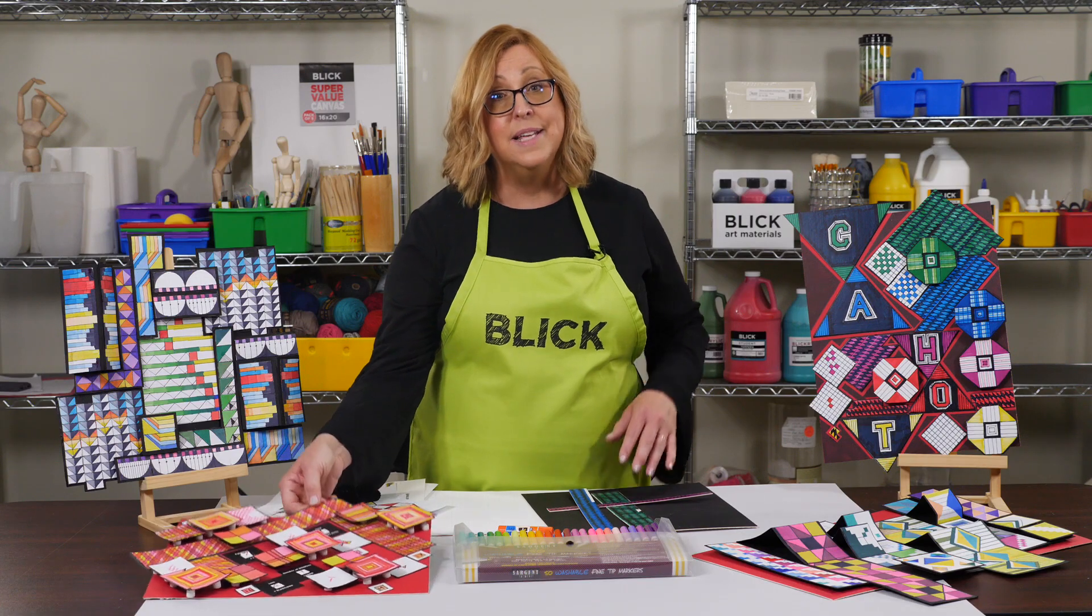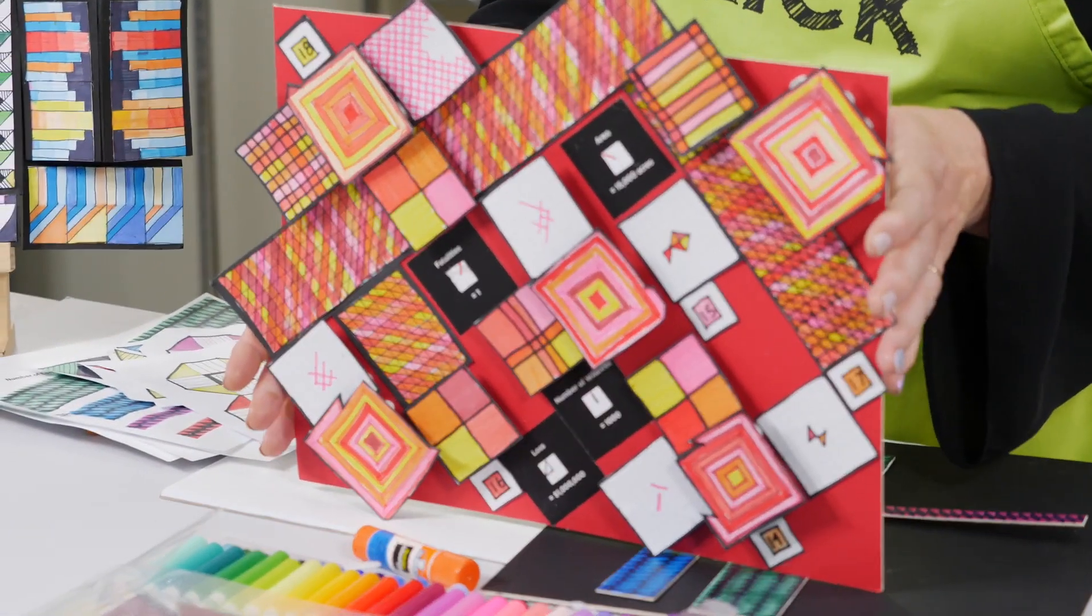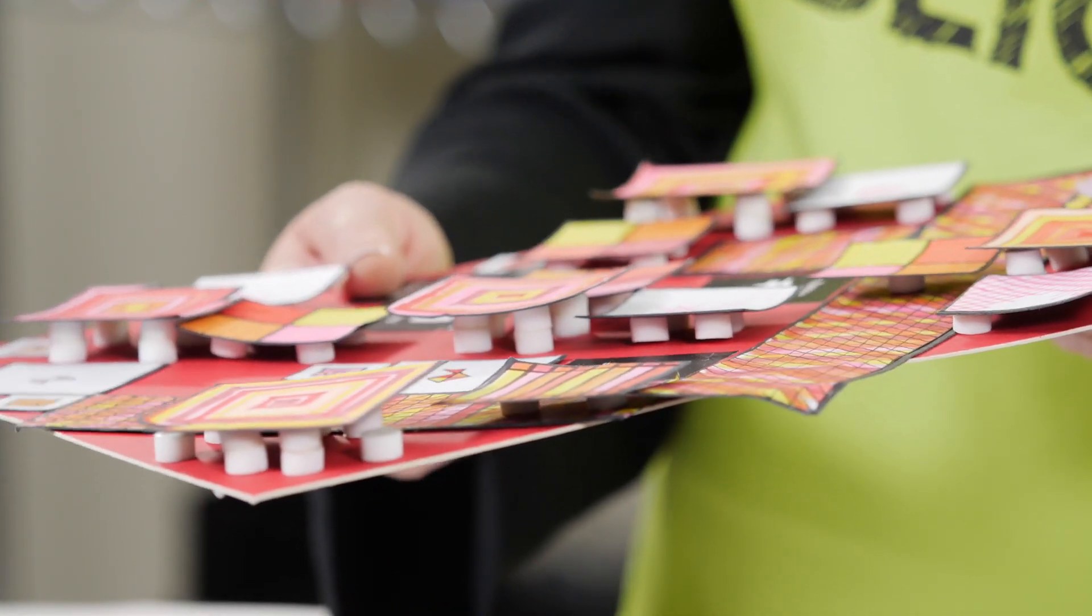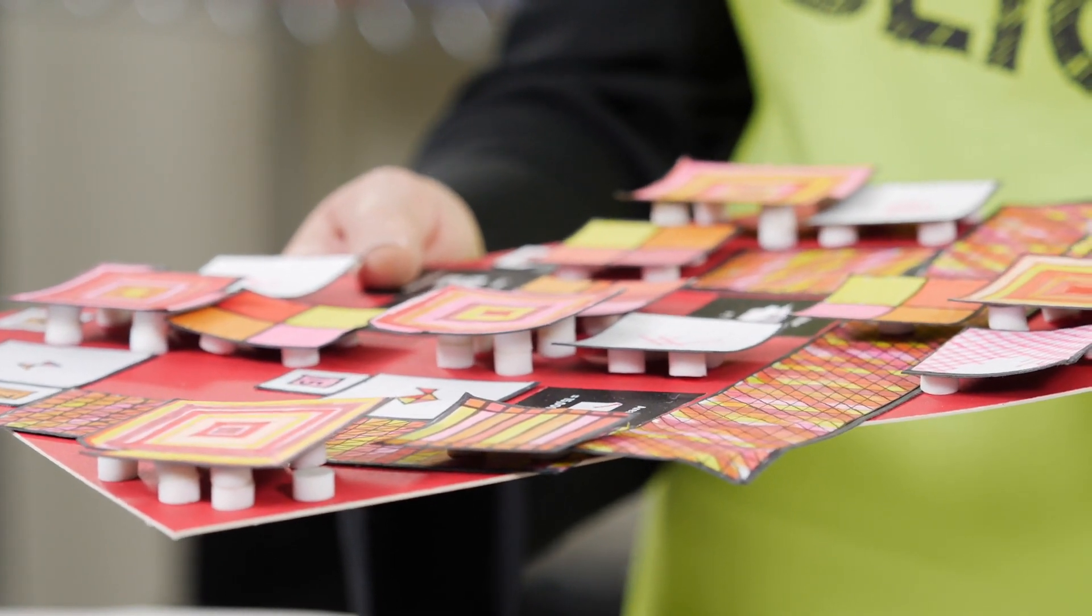As an option, you can raise some of the pieces from the surface by placing something beneath them. If you look inside this piece, you can see there's three dots. They're little foam buttons, and they have adhesive on each side. You just peel and stick them.